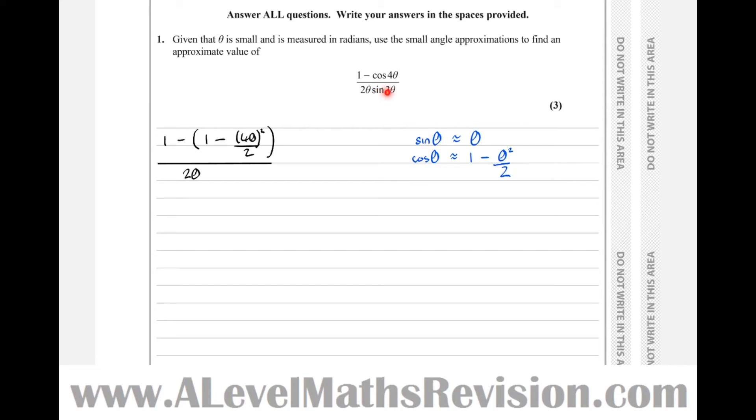And times the sine of 3 theta. Well, sine theta becomes theta, so sine of 3 theta becomes 3 theta. So 2 theta times 3 theta, which is equal to...